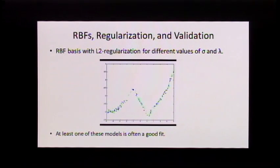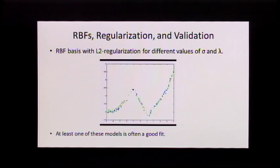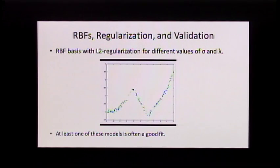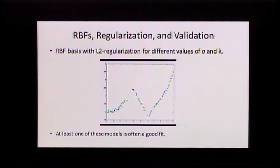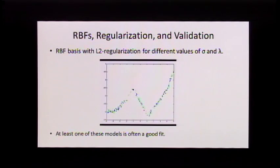In derivative-free optimization there are a few things based on RBFs — Bayesian optimization, EGO, Direct. There are optimization codes that evaluate your function at a bunch of points, fit one of these RBF basis things to the function values, and try to estimate where the minimum is and where to evaluate next. Those are popular in the non-convex optimization world where you want a method that converges to the global optimum. The convergence rates are weird: if your function is not smooth it's actually slower than grid search, but if your function is sufficiently smooth you can solve your non-convex problem faster than worst-case rates would indicate.